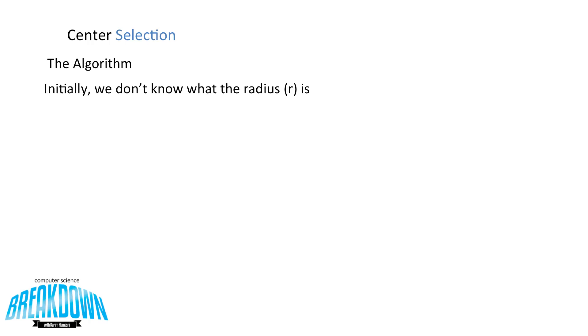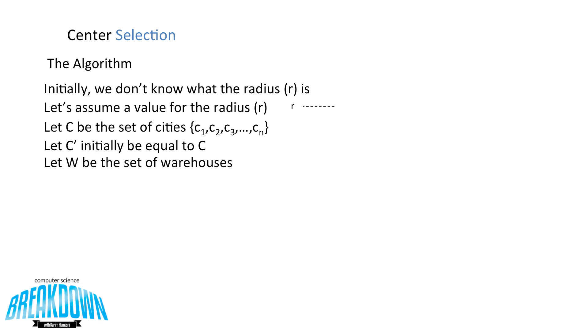So initially we don't know what the radius r is, so we have to assume a value for the radius r. Let's say it's equal to that. We want to let c be the set of cities c1, c2, c3 all the way to cn. And we also want to define c' and initially it'll be equal to c. We'll let w be the set of the warehouses that we've placed, and initially before placing any warehouses, w is equal to zero or empty. And our target k value is five, so we have only at most the materials needed to build five warehouses. We can't build any more. So let's see if we can serve all of the cities with at most five warehouses. I've placed the c' values and w in the corner so we can update them as we go along, as well as a legend stating the length of r and the length of 2r. And here's the algorithm and I'm going to go over that in just a moment.